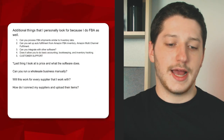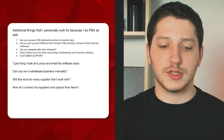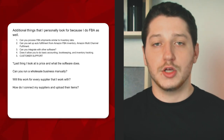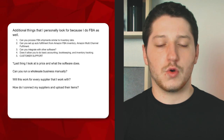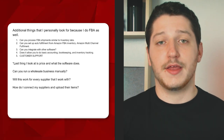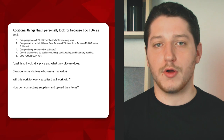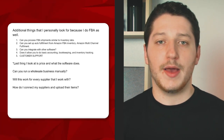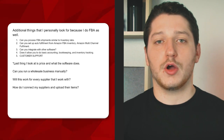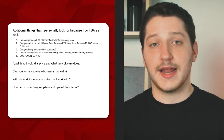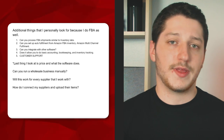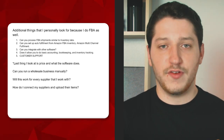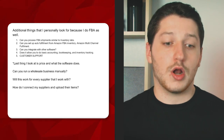The next criterion was: can you set up auto fulfillment from Amazon FBA inventory — i.e., Amazon multi-channel fulfillment? This is where you have inventory in Amazon's warehouse and have them ship to any customer, not just Amazon orders. So if I get an eBay order, the software needs to recognize that the item is in an Amazon warehouse and automatically create the fulfillment order.